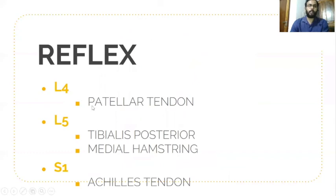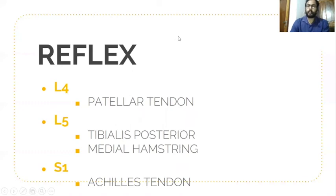For reflexes of the lumbar spine: L4 — patellar tendon reflex; L5 — tibialis posterior and medial hamstring reflex; S1 — Achilles tendon reflex; S2, S3, S4 — digital rectal examination. This clinical examination of myotome and dermatome is very effective for diagnosing which nerve root is affected before taking an MRI, and is essential for differential diagnosis, prognosis, and follow-up assessment.